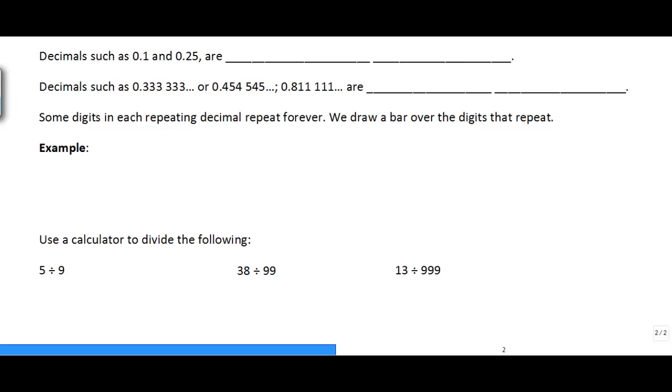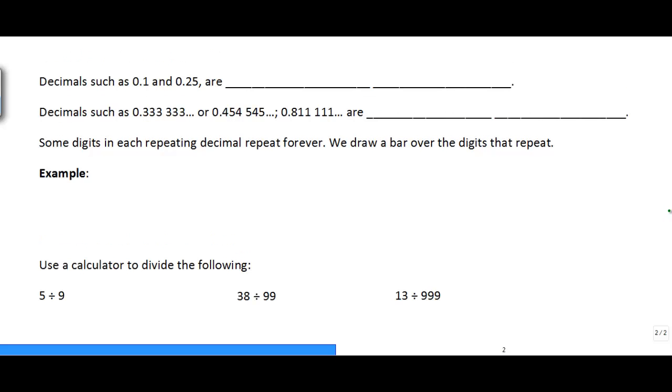So there's different kinds of decimal numbers that we'll see. Decimal numbers such as 0.1 and 0.25 are what we call terminating decimals. And by terminating, we mean the numbers eventually stop. Other decimals such as 0.33333, which goes on and on forever, or 454545, it goes on forever, are repeating decimals.